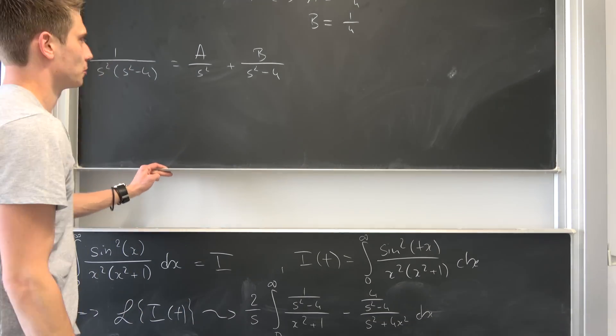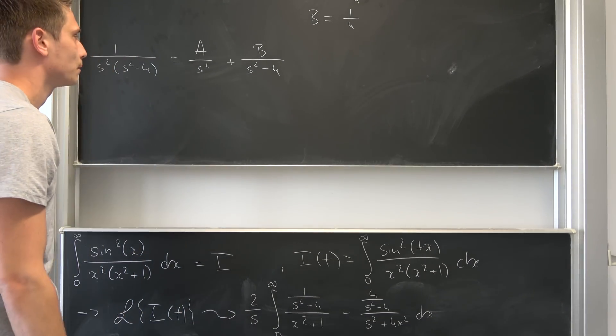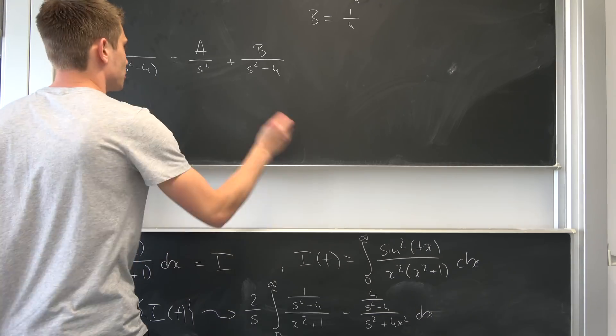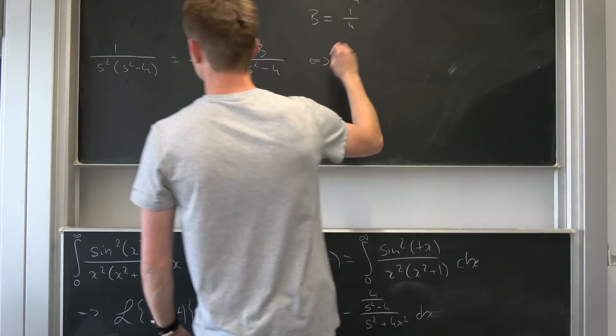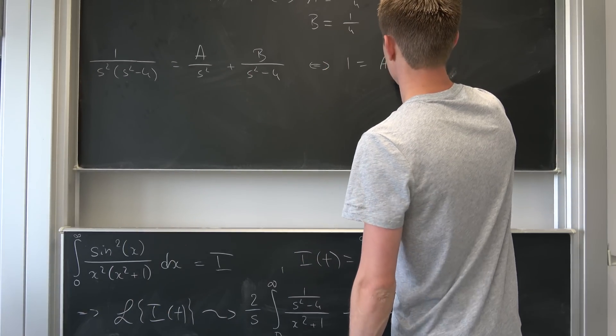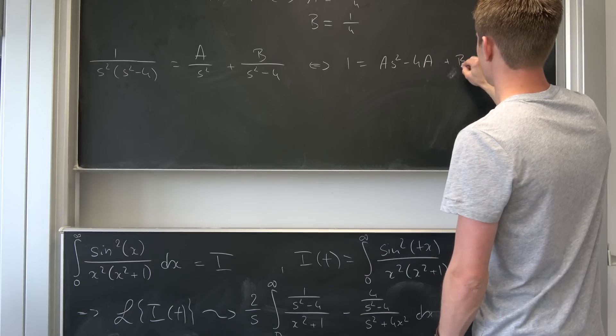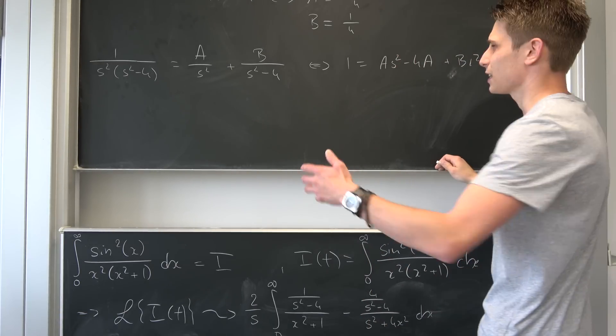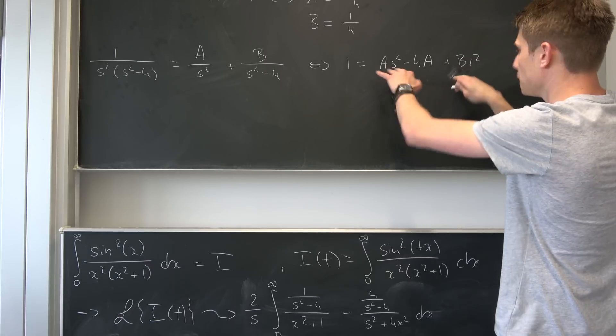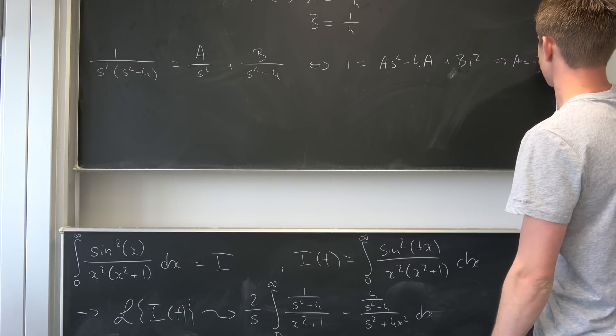So next partial fraction decomposition. We have this right here and now we can use this substitution trick once again. Multiplying both sides by this big denominator will leave us with, so we now have 1 is equal to a s squared minus 4a plus b s squared. Same situation as before, a needs to be minus b, a equals to minus b. Just like before that now means that 1 is equal to minus 4 times a.